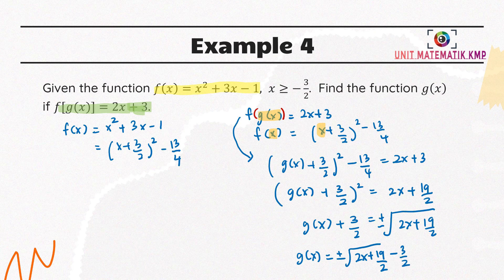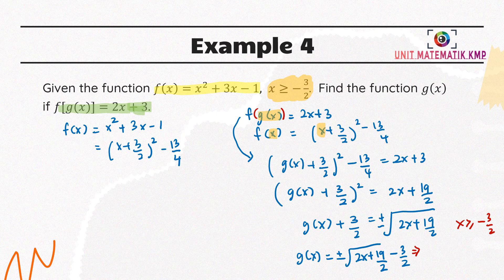Referring back to the question, it gives you the condition that x must be greater than negative 3 over 2. That's why we only take the positive root. So g(x) equals the positive square root of (2x plus 19 over 2) minus 3 over 2. This is the answer.